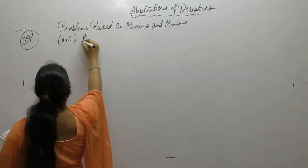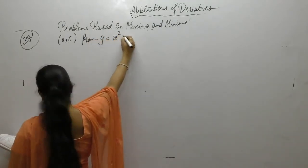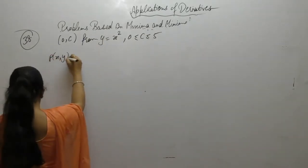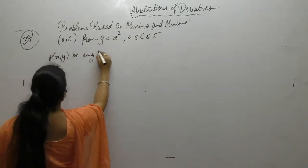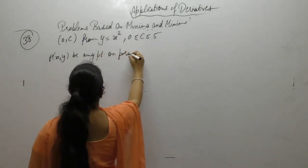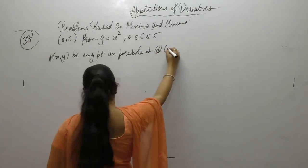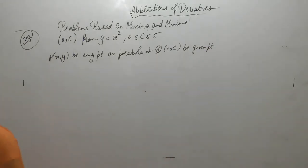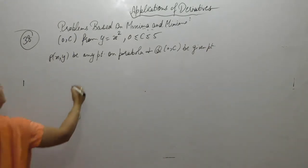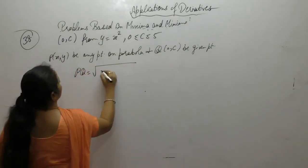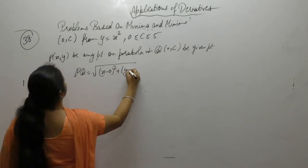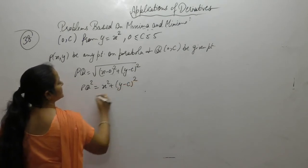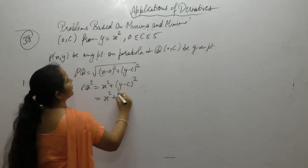Next problem: find the minimum distance from point Q(0, c) on the parabola y equals x squared, where 0 ≤ c ≤ 5. Let P(x, y) be any point on the parabola and Q(0, c) be the given point. Then PQ squared equals x squared plus (y minus c) squared. Find y from the parabola equation: y equals x squared.